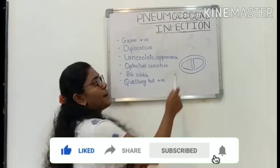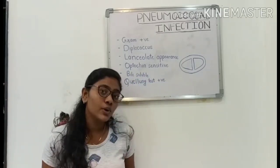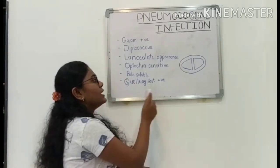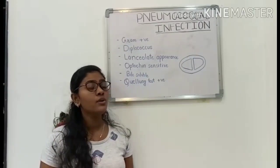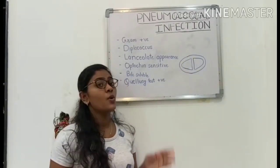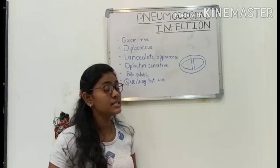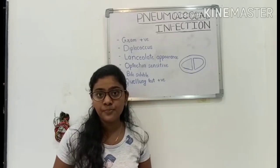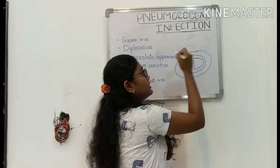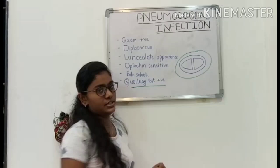The bacteria is a capsulated bacteria and it is optochin-sensitive, which means it does not grow in a medium which contains optochin. It is bile-soluble and it gets the quellung test positive. The capsule of the bacteria is antigenic, and when we add any antiserum or antibody to the medium containing this capsulated bacteria, the capsule of the bacteria gets swollen. This swelling of the capsule is considered a quellung-positive result.